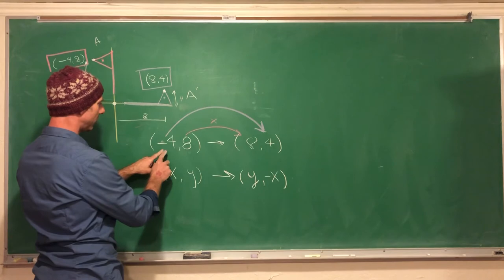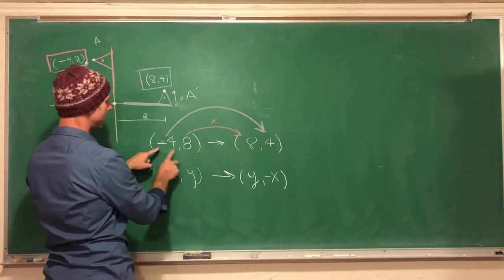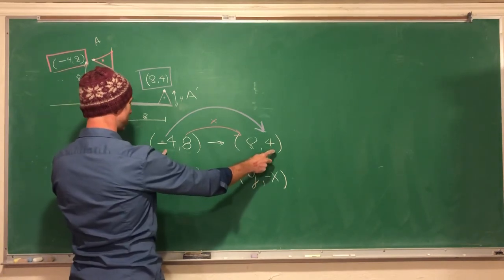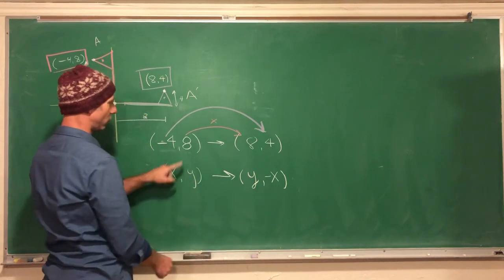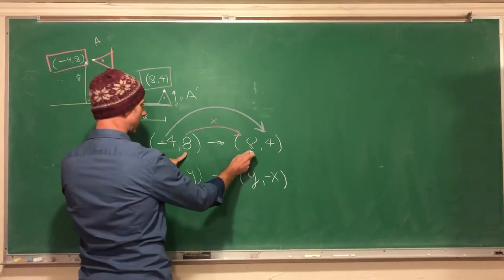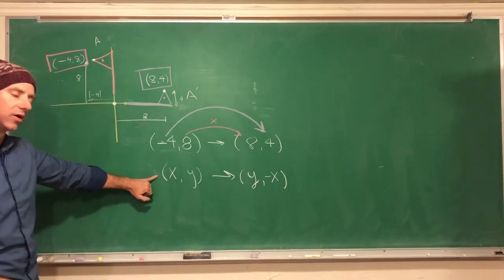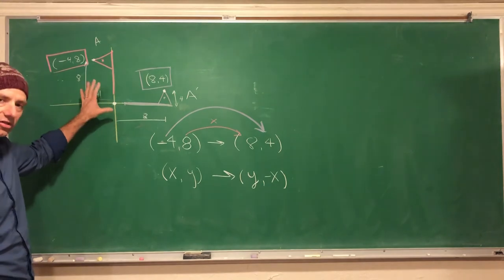Now let's look at our work. I'm going from negative four, and this x point now is my y, and change signs. So x to negative x in that position, and then y went to the x position. So this is my rule that I developed for this situation.